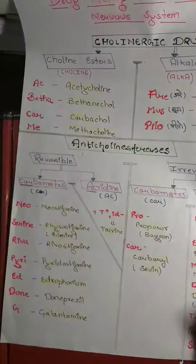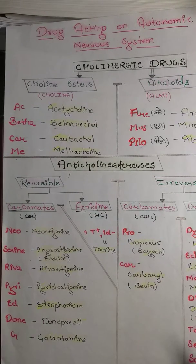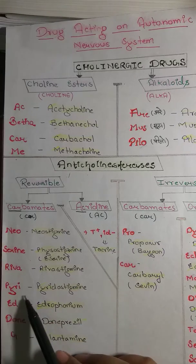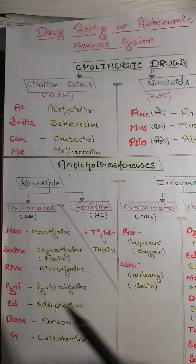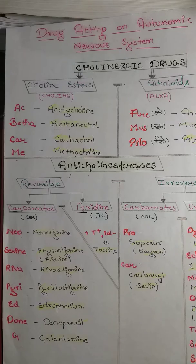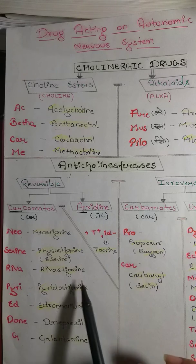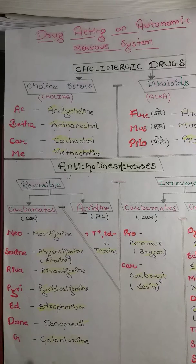For the reversible anticholinesterases, we use a story mnemonic. The characters Neo, Shirin, Riva, Pyri, Adi, and Dant-G help us remember: Neostigmine, Physostigmine, Rivastigmine, Pyridostigmine, Edrophonium, Donepezil, and Galantamine.